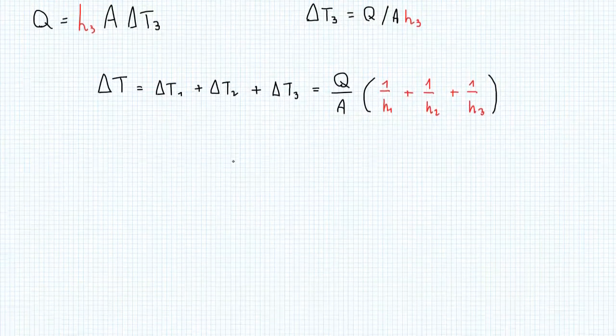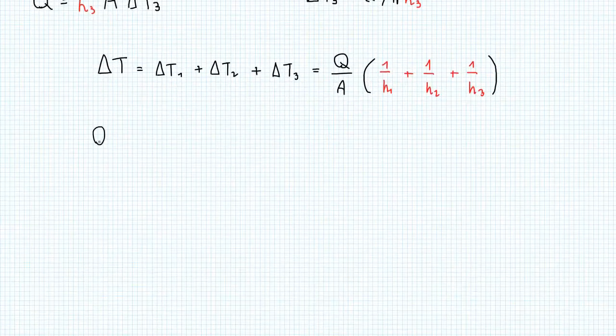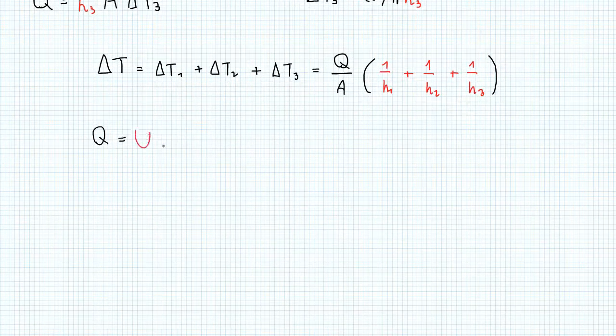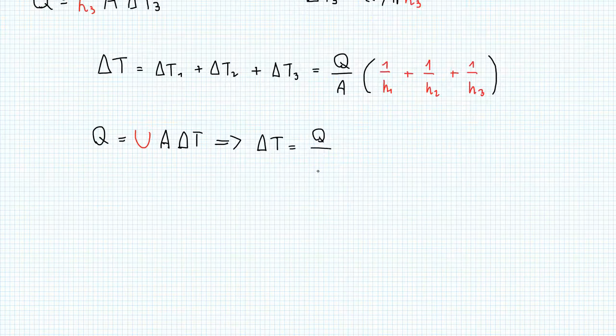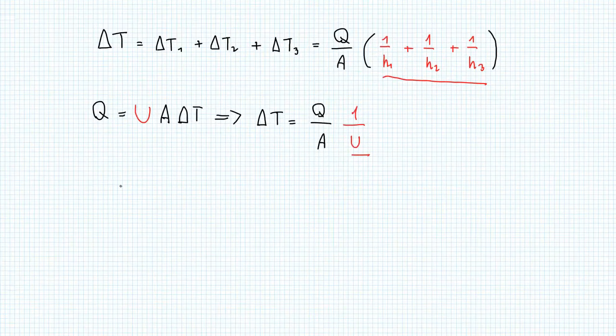And if we look back at our overall heat transfer equation, we'll see that delta T in that case was equal, so if we rearrange it, we'll see delta T is equal to Q over A over U. So in red, I've put 1 over U showing that it's the same as the term we found before, 1 over H1 plus 1 over H2 plus 1 over H3.